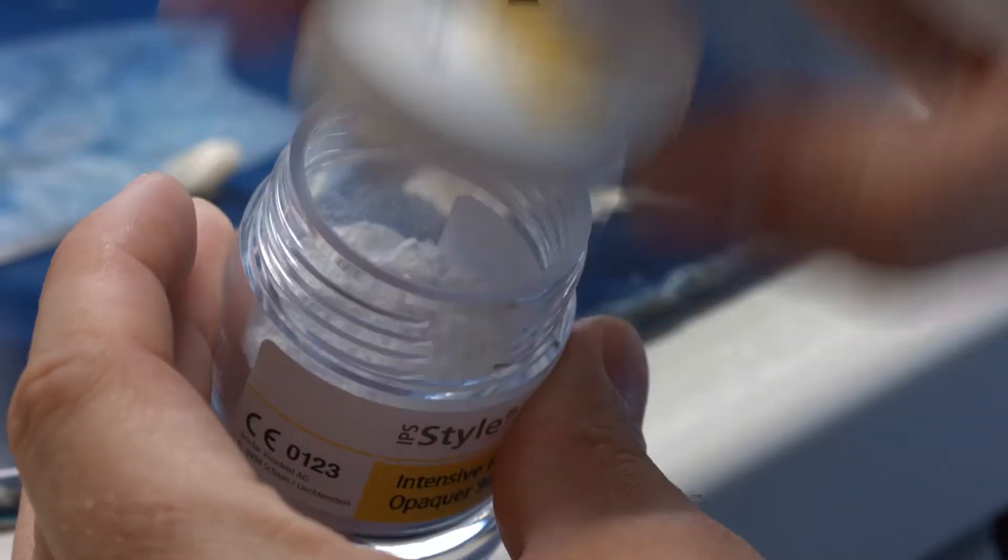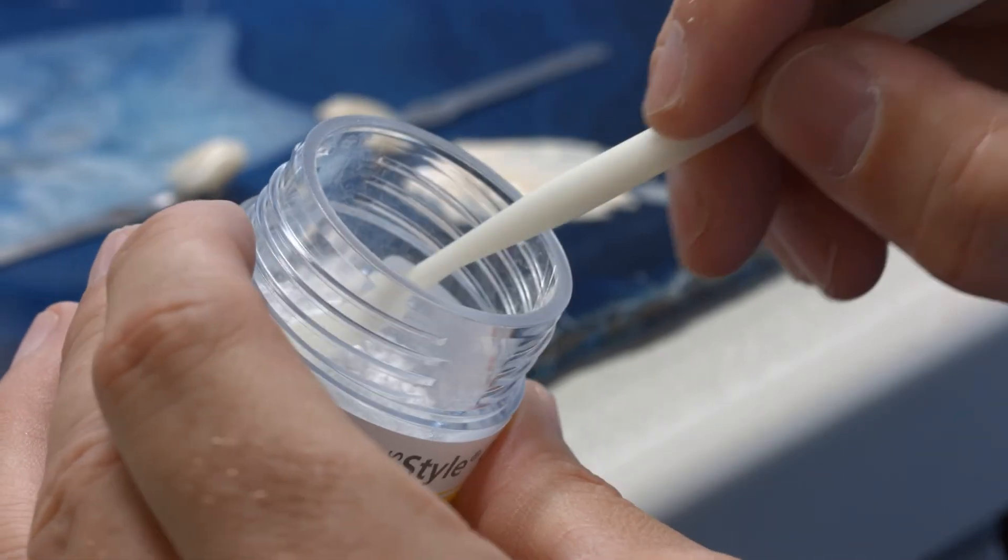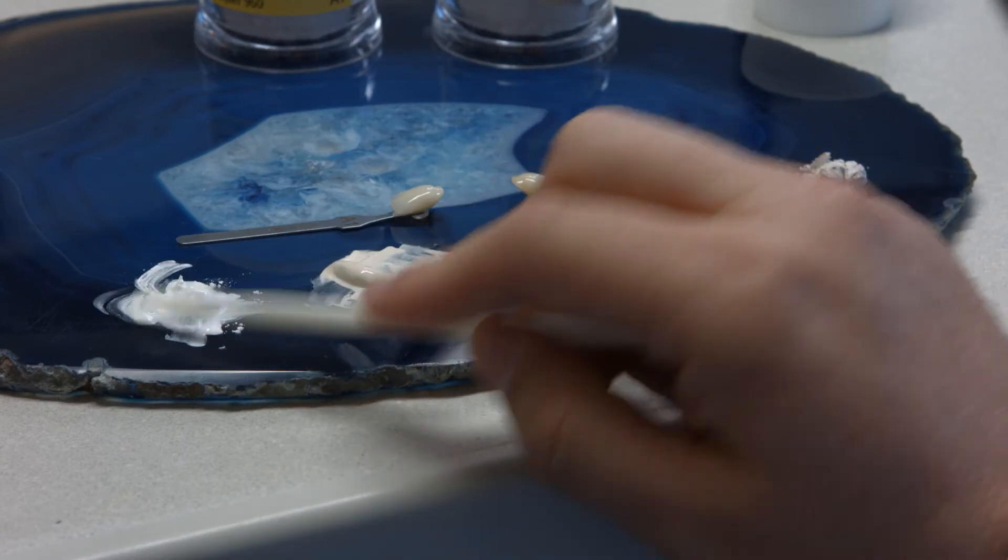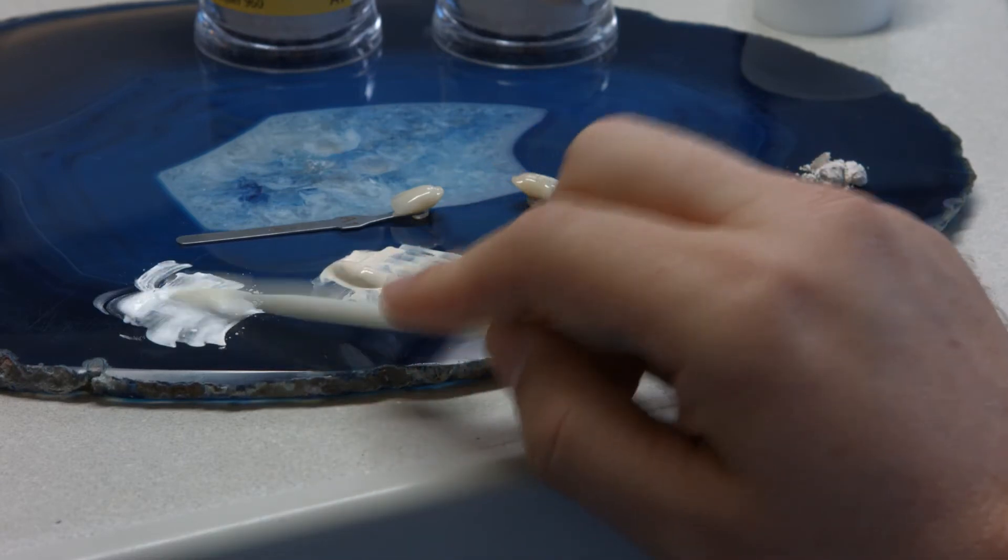For the characterisation of the restoration, additionally use IPS-style Ceram Intensive Powder Opaquer and also mix it with some opaquer powder liquid until you obtain the desired consistency.